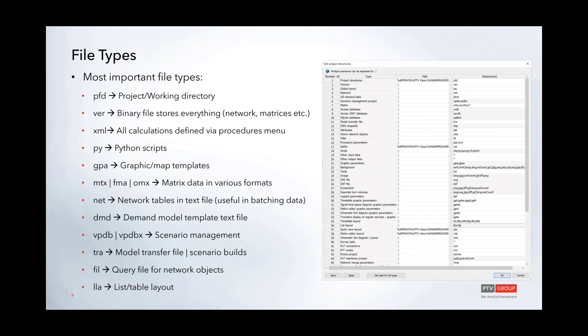The version file is the main binary file in vZoom, storing everything — all your network data, matrices, the basic demand model structure, and calculations. When you load this binary file you'll see essentially all of the data associated with the model.